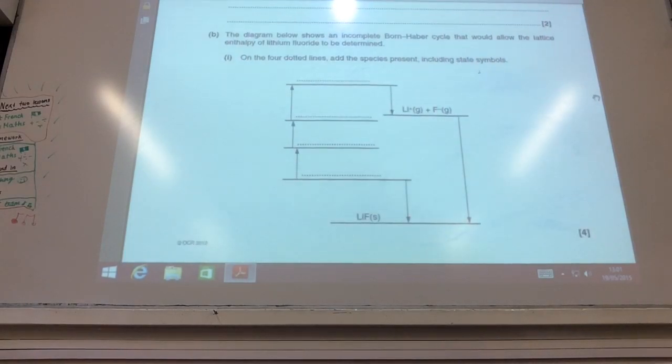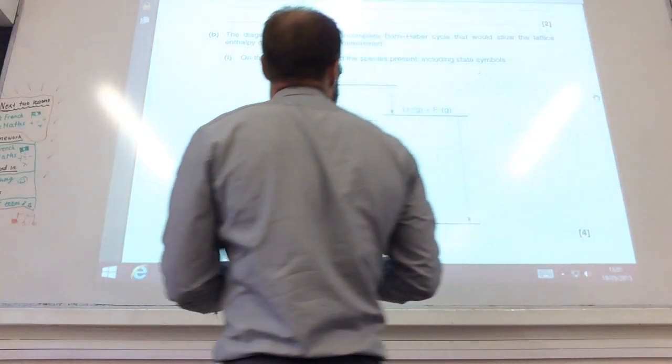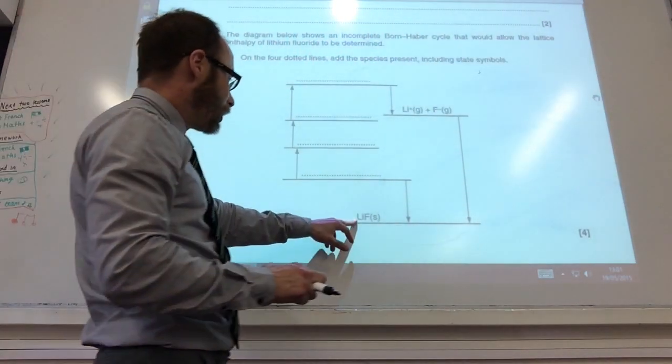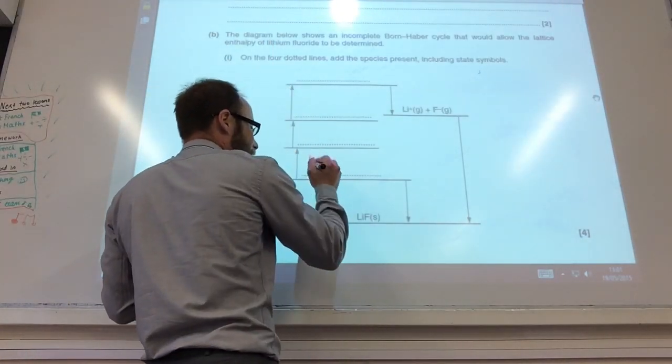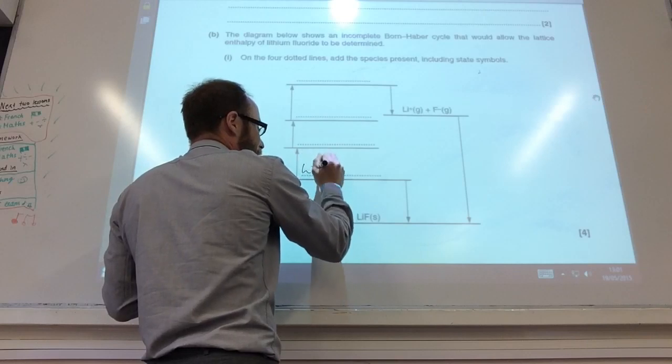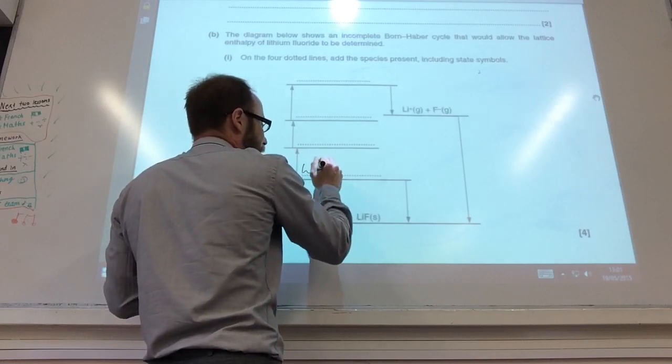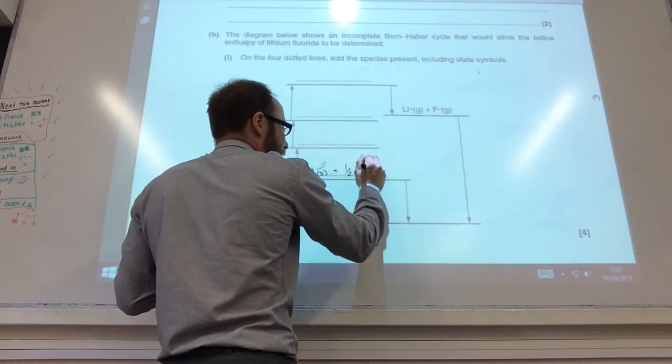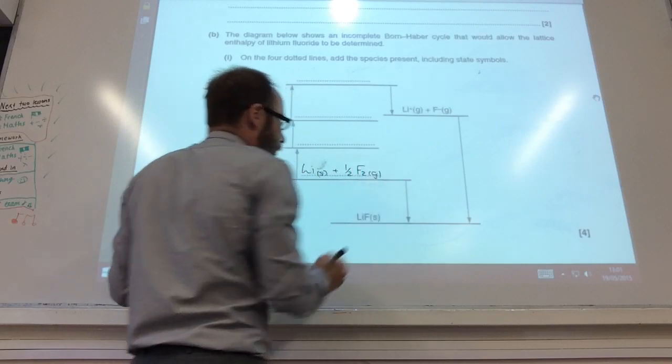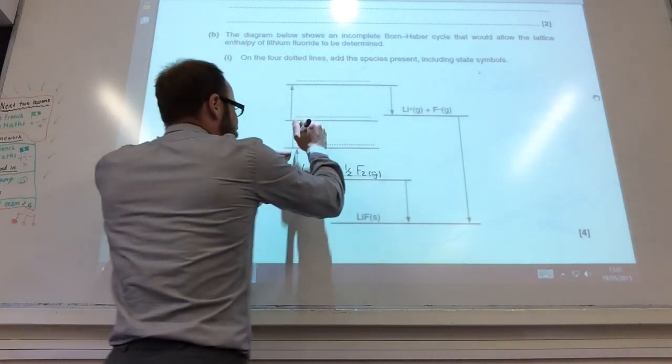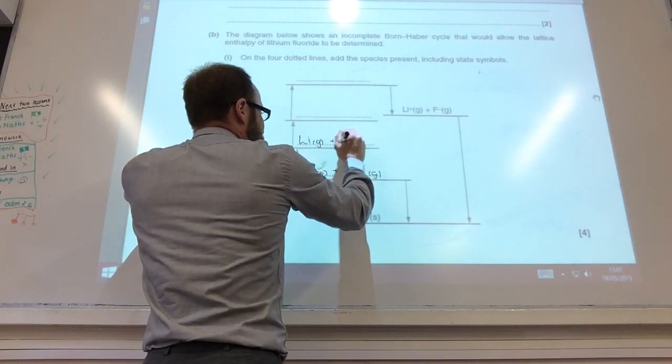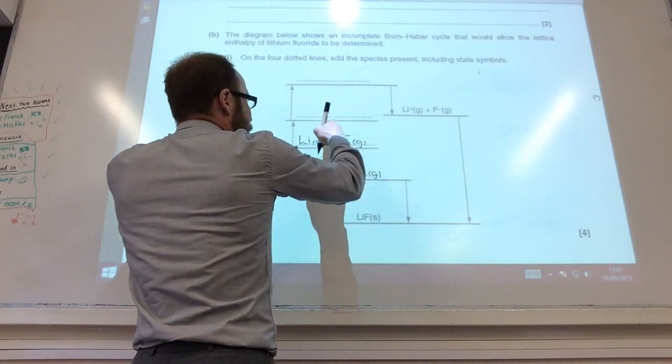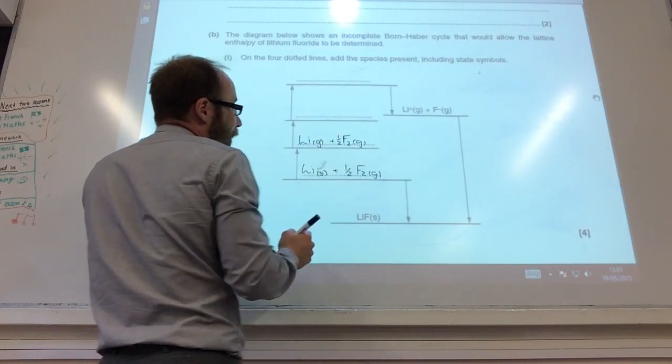Okay, so we now need to complete the Born-Haber cycle for this lithium fluoride. So the bottom line is lithium fluoride in a solid state. Obviously this is going to be the formation, so I'm going to start off with lithium solid plus a half F2 gas. Going up, well let's first atomize lithium to get lithium into a gas, I'm leaving fluorine alone. Now let's atomize fluorine.